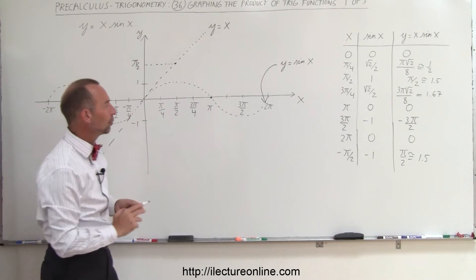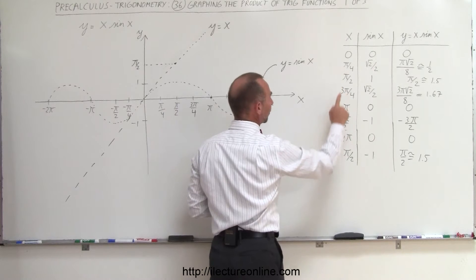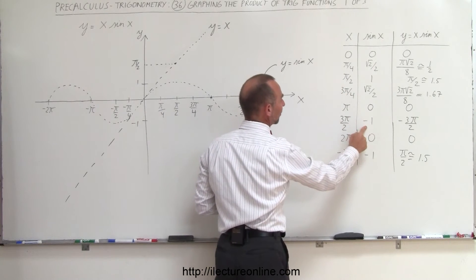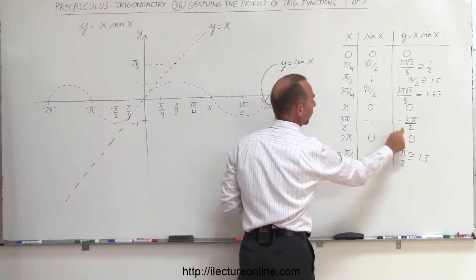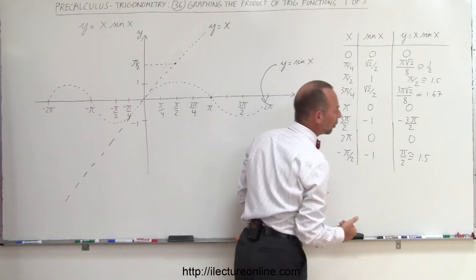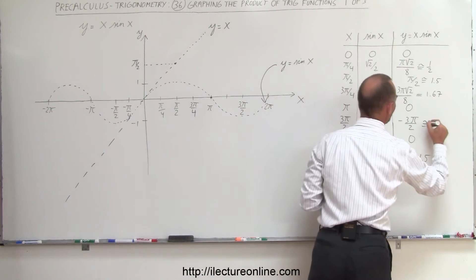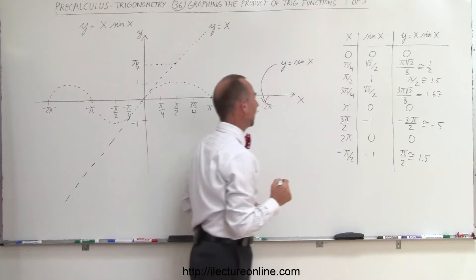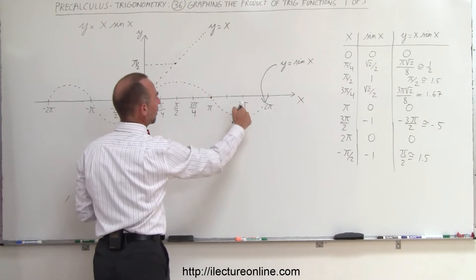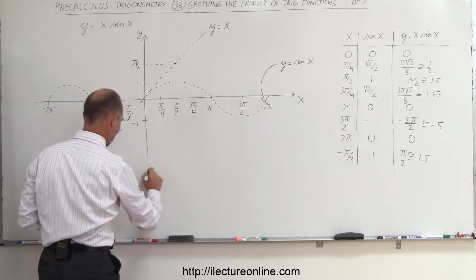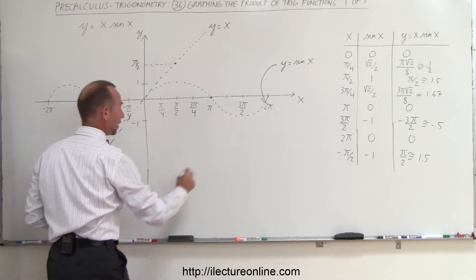What happens when you have 3 pi over 2? Well, notice, when x equals 3 pi over 2, sine of x is negative 1, and therefore, the product will be minus 3 pi over 2. 3 pi is almost 10 divided by 2, which is approximately equal to negative 5. And then you can see that at 3 pi over 2, the function will be negative 5, which is down here somewhere.